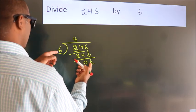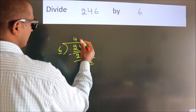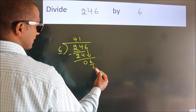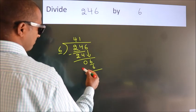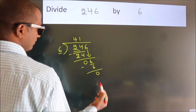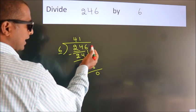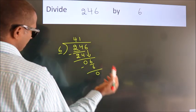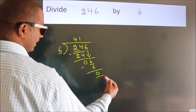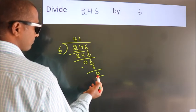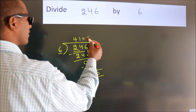...do we get 6 in the 6 table? 6 ones are 6. Now we subtract. We get zero. After this, no more numbers to bring down, and we got remainder zero. So this is our quotient.